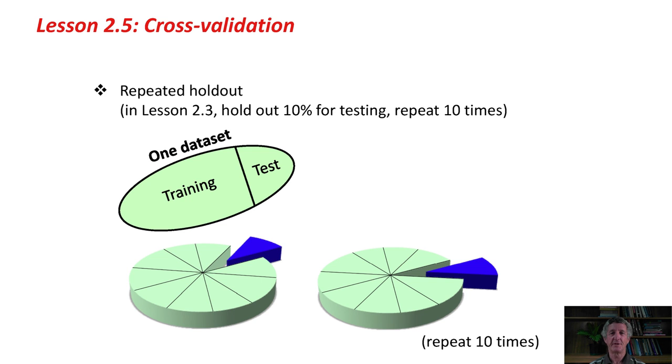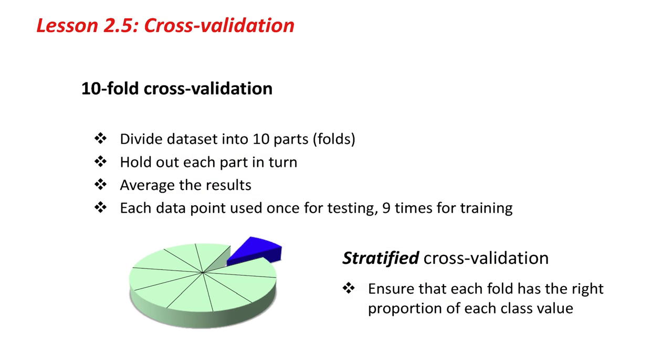In other words, we divide the data set into 10 pieces, and then we hold out each of these pieces in turn for testing, train on the rest, do the testing, and average the results. That would be 10-fold cross-validation. Divide the data set into 10 parts, these are called folds, hold out each part in turn, and average the results. Each data point in the data set is used once for testing and 9 times for training.